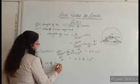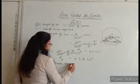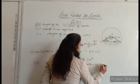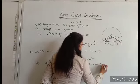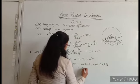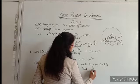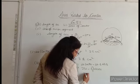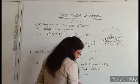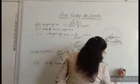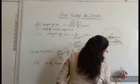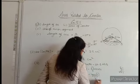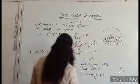Area of minor segment equals area of sector minus area of equilateral triangle OAB. Area of sector is 231 minus area of equilateral triangle using root 3 by 4 into side square, where side is 21 into 21, giving 441 root 3 by 4. So area of minor segment is 231 minus 441 root 3 by 4 cm square.